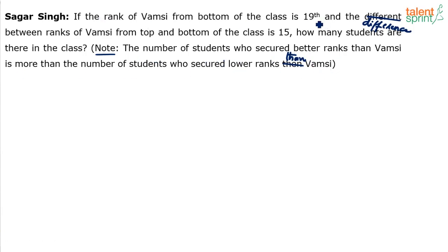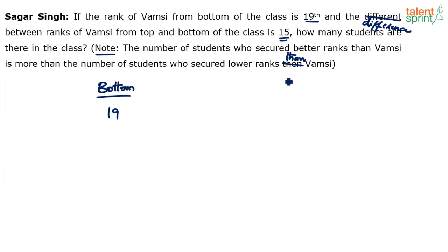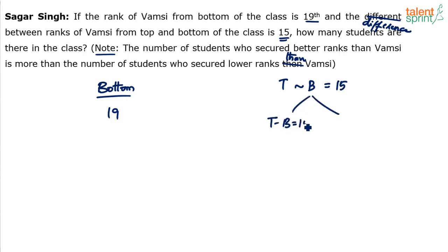The rank of Vamshi from the bottom of the class is 19th. The difference between the ranks from the top and bottom is 15. So if T is the rank from top and B is the rank from bottom, T difference B equals 15. It is a difference, not a straight subtraction, so there are two cases: T minus B equals 15, or B minus T equals 15.